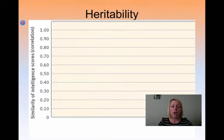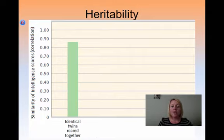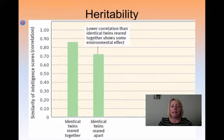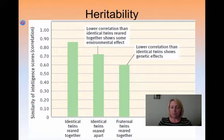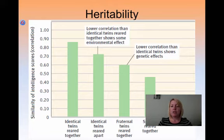Looking at the heritability of IQ scores, identical twins reared together have the highest correlation of similarity on their intelligence scores, followed by identical twins reared apart. This shows us that there is some environmental effect playing a role. Next are fraternal twins reared together — remember, fraternal twins are basically siblings born at the same time — followed by siblings reared together, and then unrelated individuals reared together.